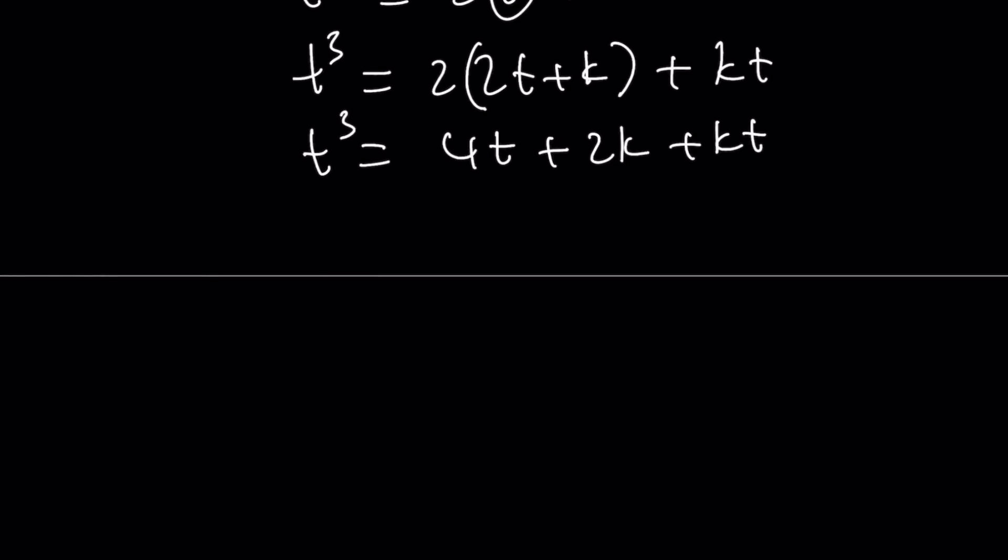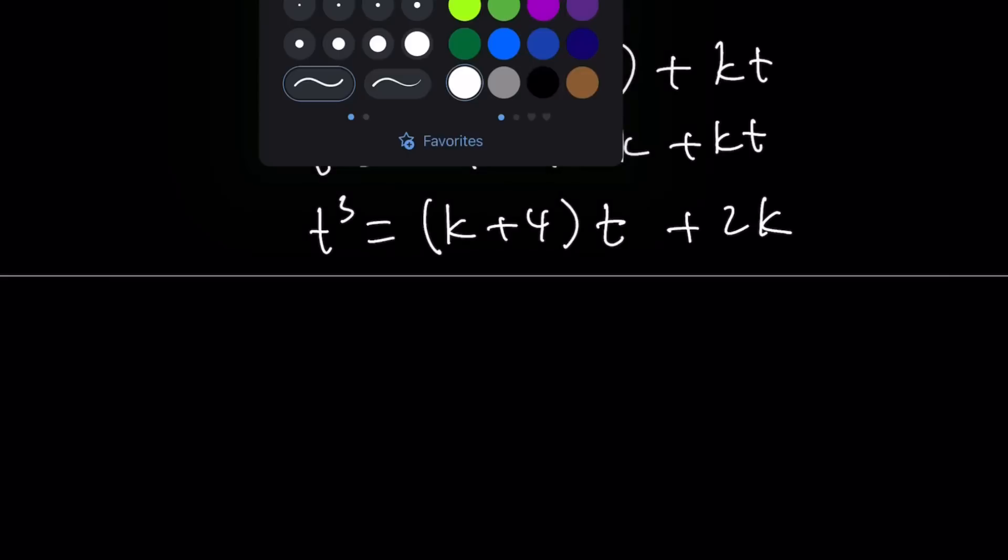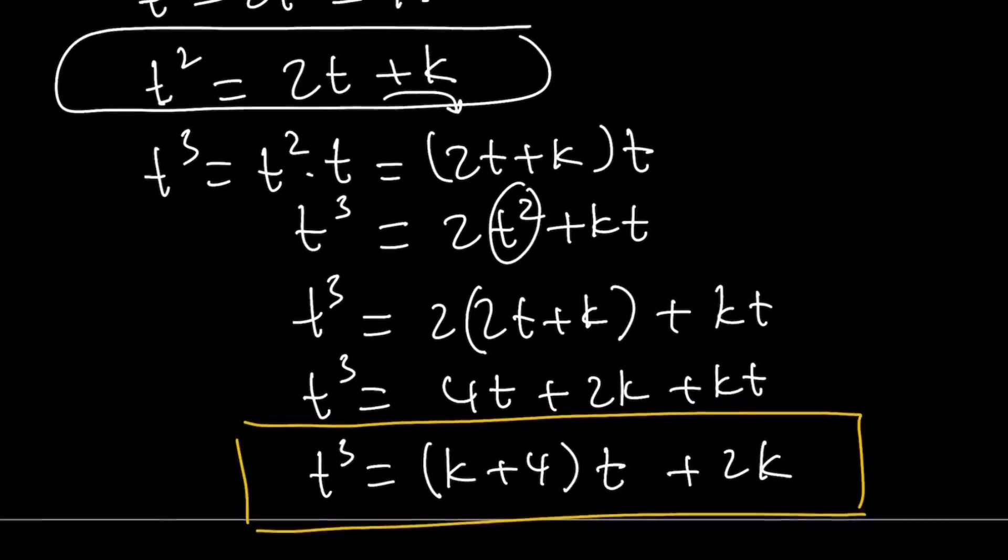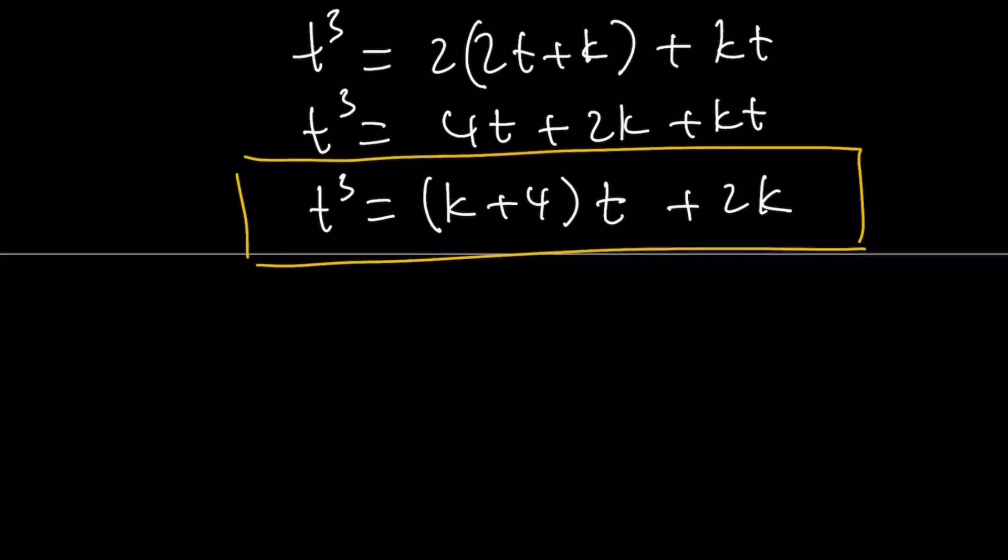Now, I want to get the coefficient of t. So I want to write this as k plus 4 as the coefficient of t times t plus 2k. Remember, k is a constant, t is the variable. And what was I able to do? Well, I was able to write t cubed in terms of t and I need to find k. But I also know that t cubed equals 5t plus 2.